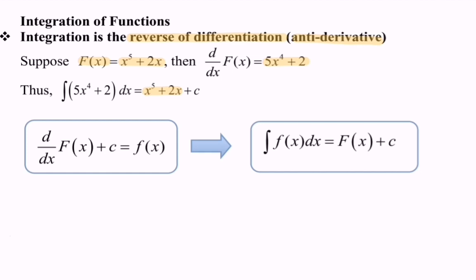So by referring to this: if we differentiate capital F(x) plus c with respect to x, we will obtain f(x). If we integrate f(x) with respect to x, we will obtain capital F(x) plus c. So this is the process we call the reverse of differentiation, or the anti-derivative.